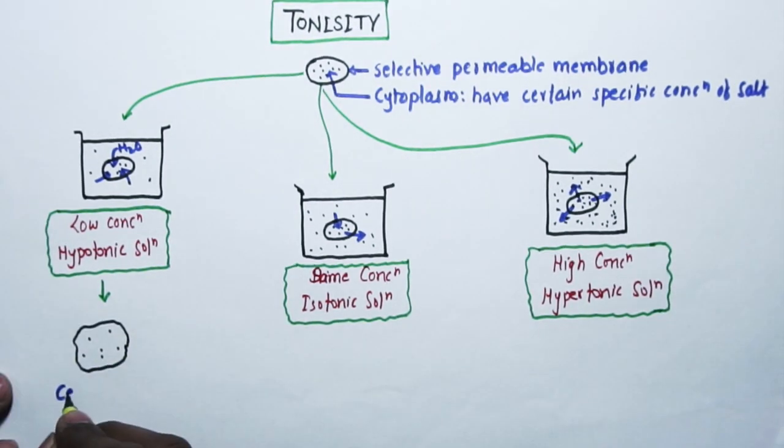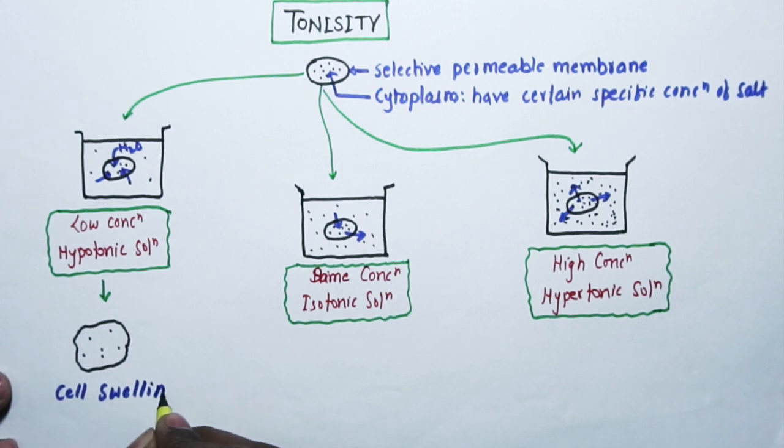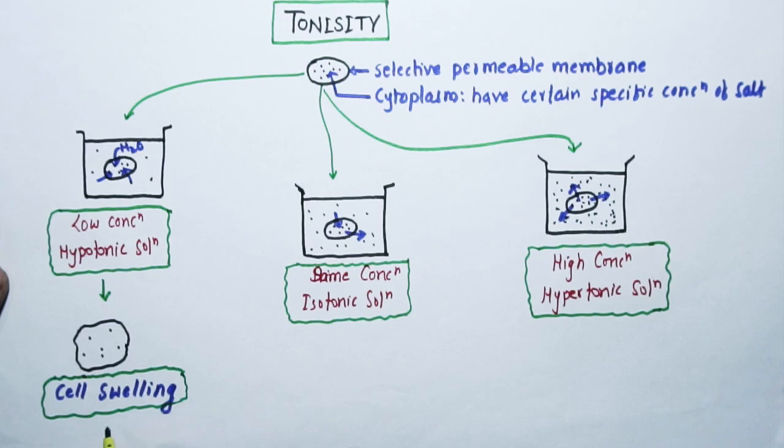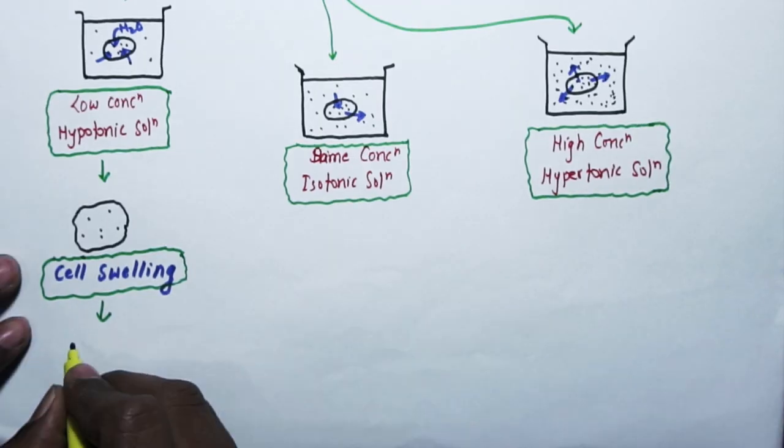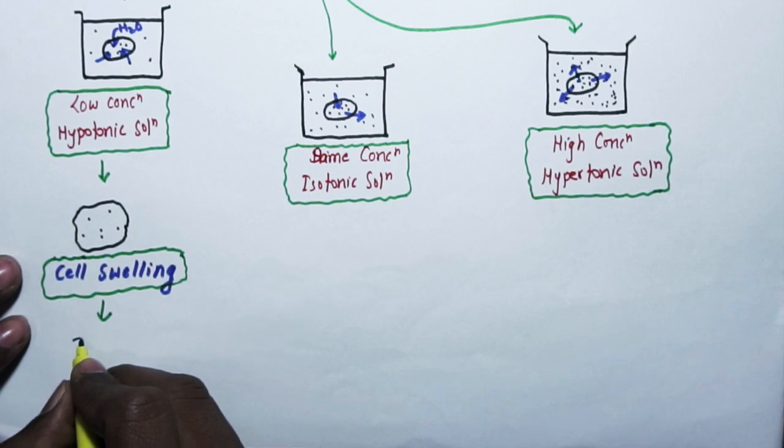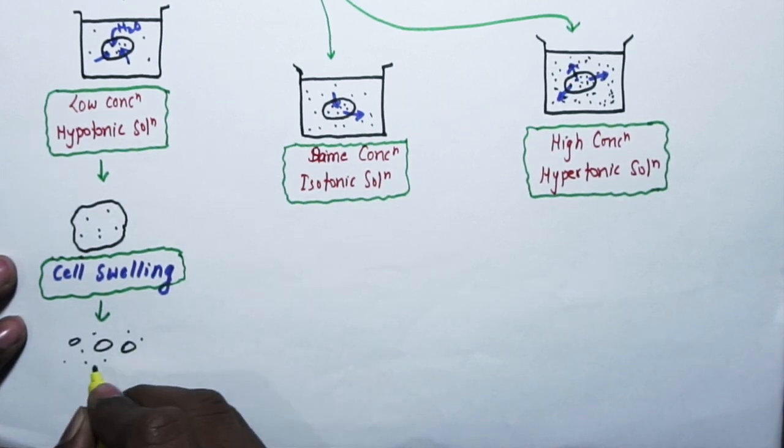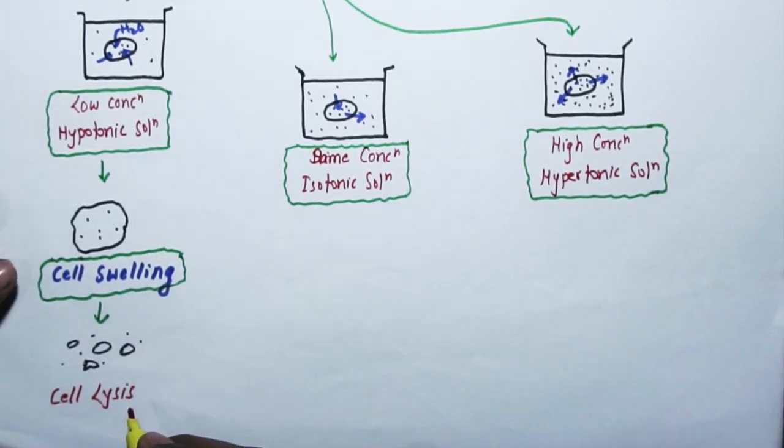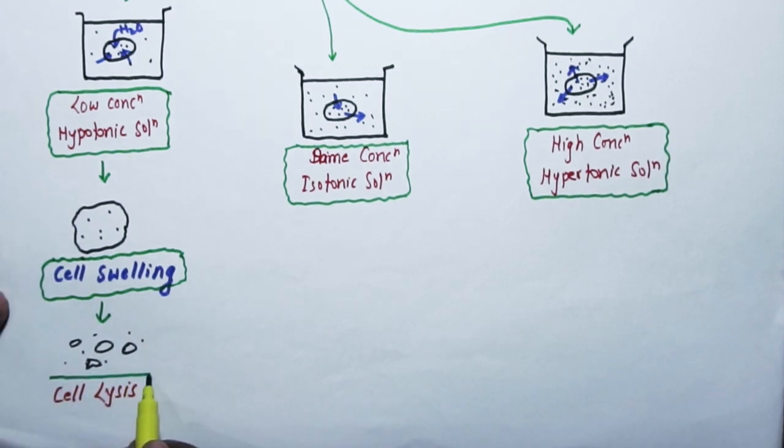In the first beaker, where water goes inside the cell, cell swelling will take place. Please note that the cell membrane is selectively permeable, so salt cannot come inside or go outside the cell. If water rushes towards the cell, the cell will keep on swelling.